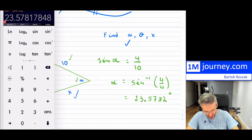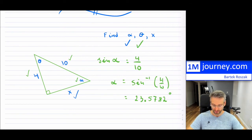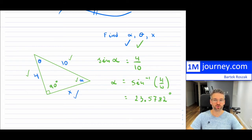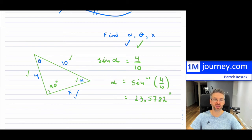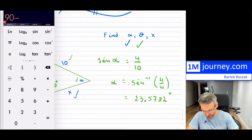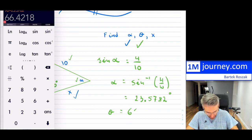What about theta? Once we have one angle, it's simple. We know the right angle is 90 degrees, and all angles of a triangle sum to 180. So theta is 180 minus 90 minus 23.5782, which gives us 90 minus 23.5782, and that's our theta — approximately 66.4 degrees.